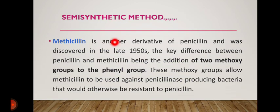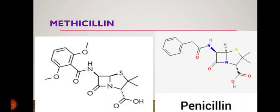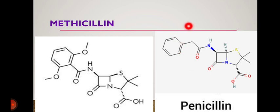Another semi-synthetic antibiotic is methicillin, where two methoxy groups (O-CH3) are present on the phenyl group. Looking at the structure: at positions two and six of the phenyl ring, there are methoxy groups — this is called 2,6-dimethoxyphenyl penicillin, which is the structure of methicillin.